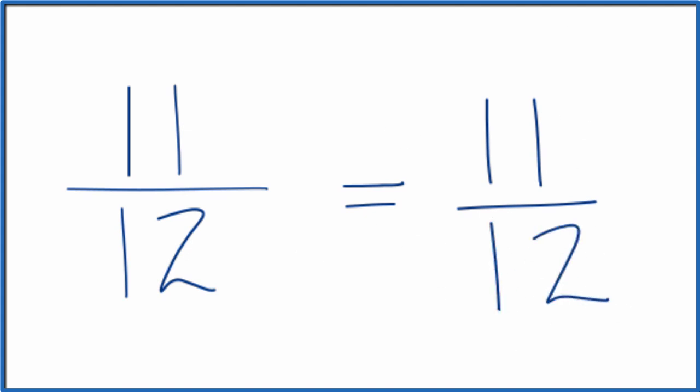And that's what we started with, 11 twelfths. What this means is that 11 twelfths, the fraction 11 twelfths, is already simplified. You can't reduce or simplify this any further. It's in lowest terms.